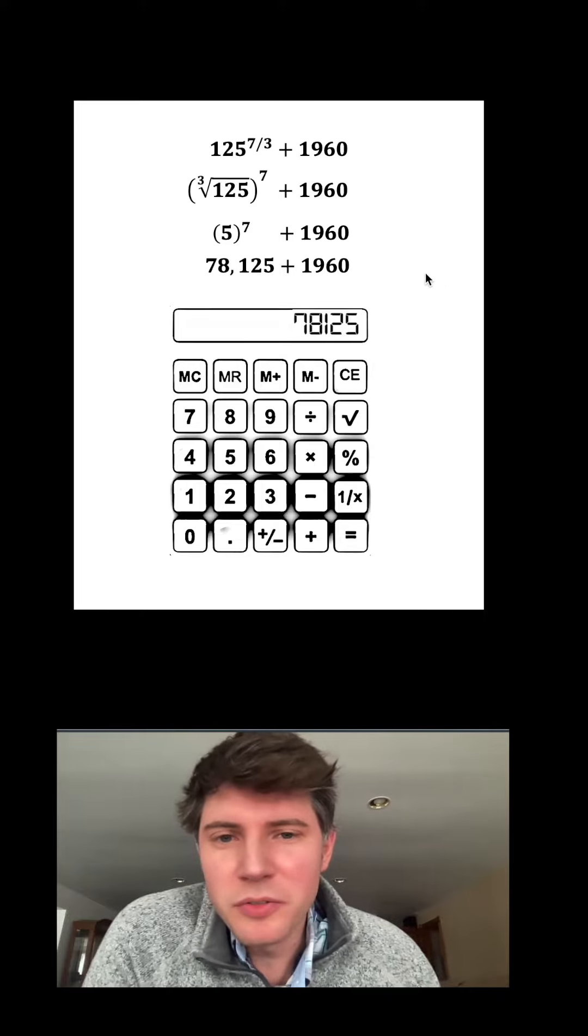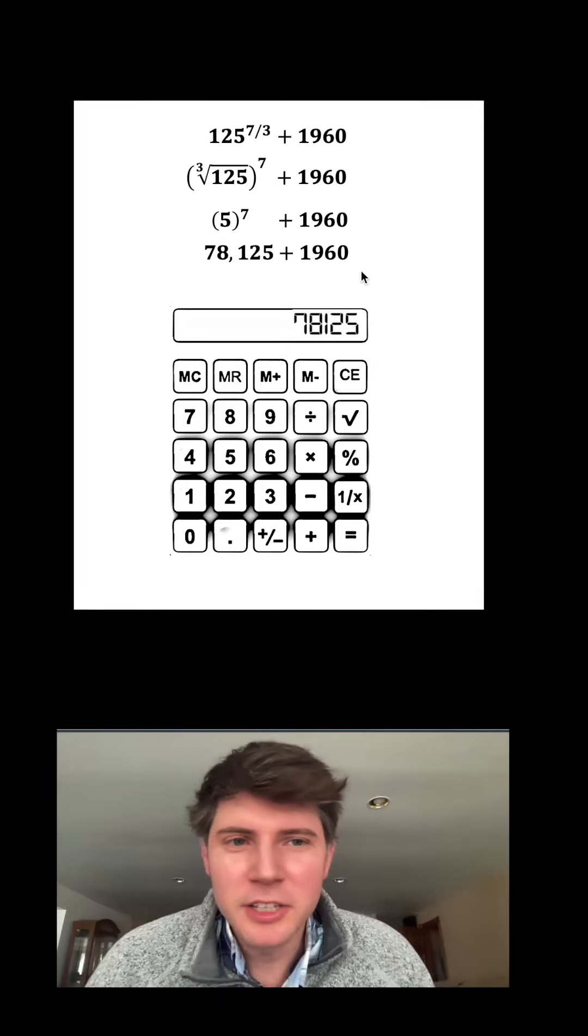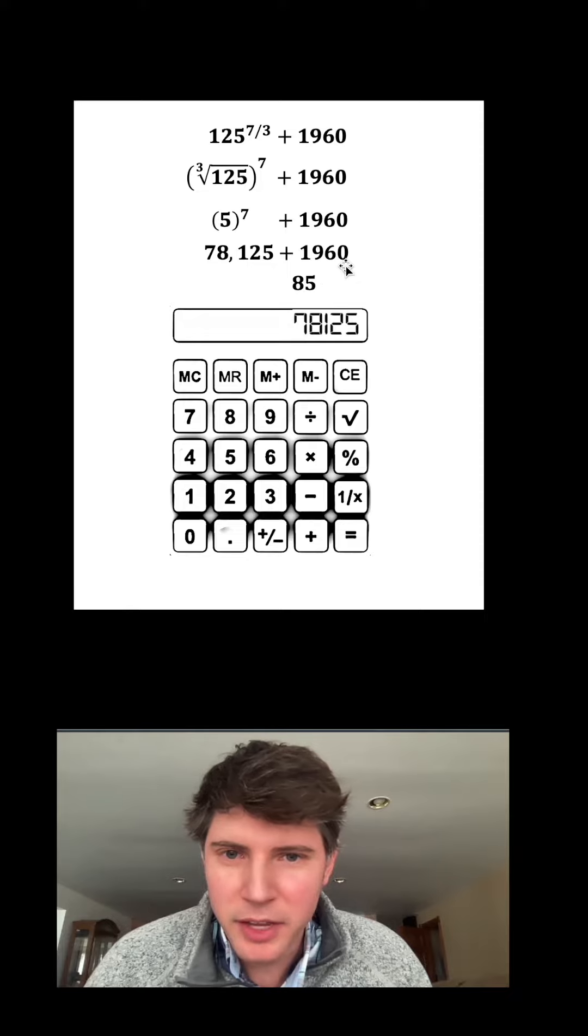So we're going to end up doing 78,125 plus 1960. And I don't think I need a calculator for this. 5 plus 0 is 5, then we have the 8, and then a 10, carry the 1, carry the 1 again. So we have 80,085.